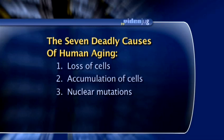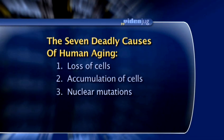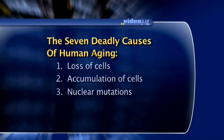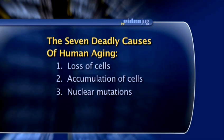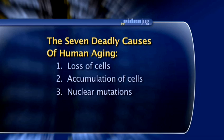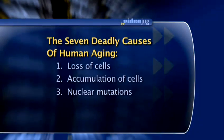Number three is mutations in our chromosomes — and of course this is cancer I'm talking about. Cancer is definitely a consequence of that. There's good reason to believe that cancer is actually the only consequence of chromosomal mutations we really need to worry about. But cancer is a big problem, so we need to fix that.